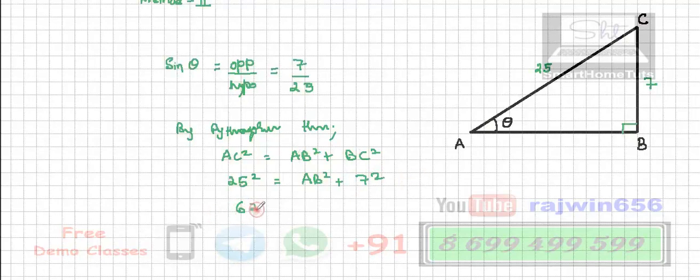So this is going to become 625. I will bring this 7 square here, so it will become minus 7 square is 49. This will be AB square.